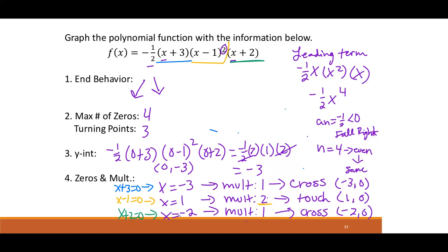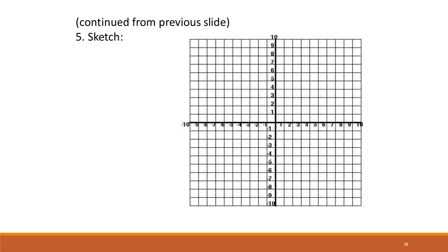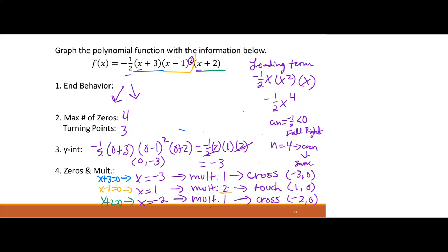Sketching the final graph: we plot points at x = −3, x = −2, and x = 1 on the x-axis, and the y-intercept at (0, −3). Both sides go down. The graph crosses at (−3, 0), crosses again at (−2, 0) — requiring a turn in between — then passes through (0, −3), touches and turns at (1, 0), and falls back down. Labeling the key points: (−3, 0), (−2, 0), (1, 0), and (0, −3).